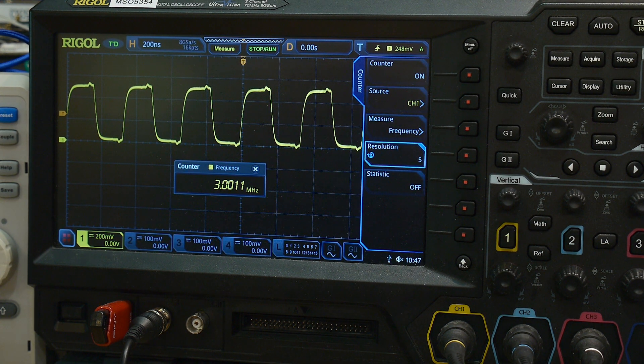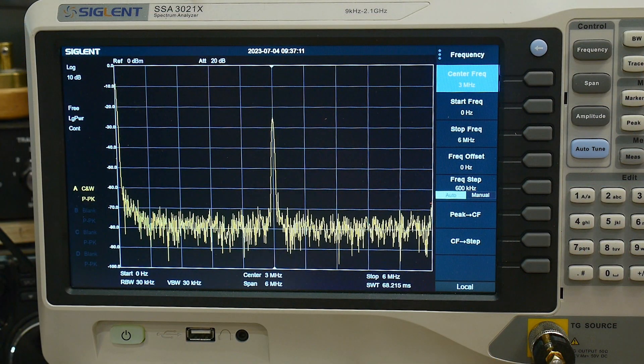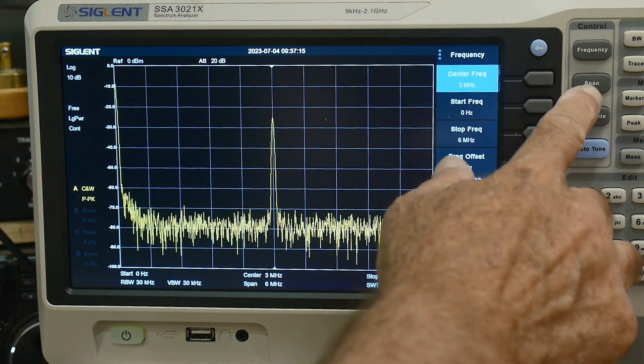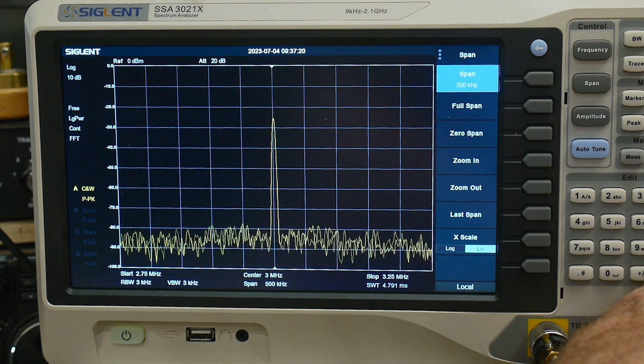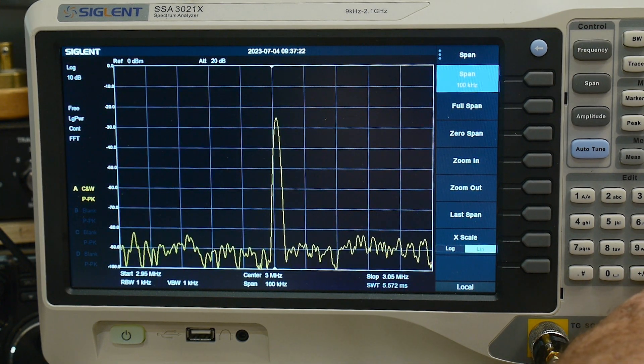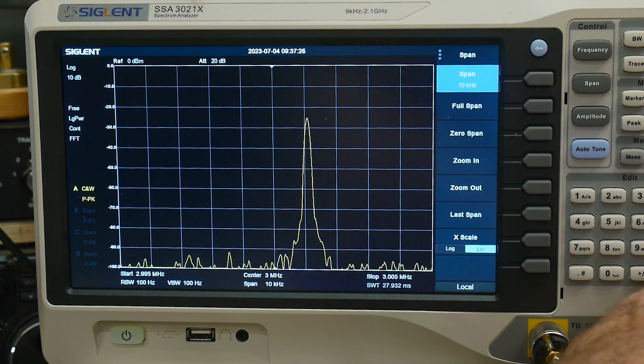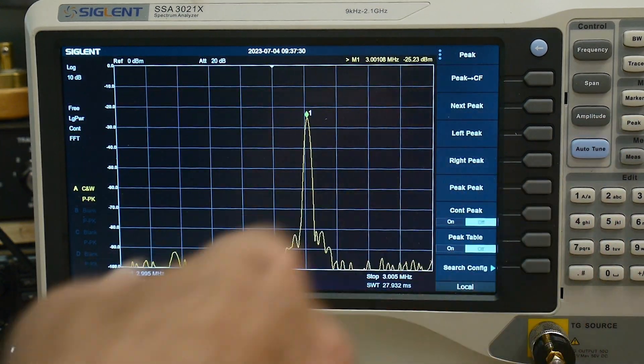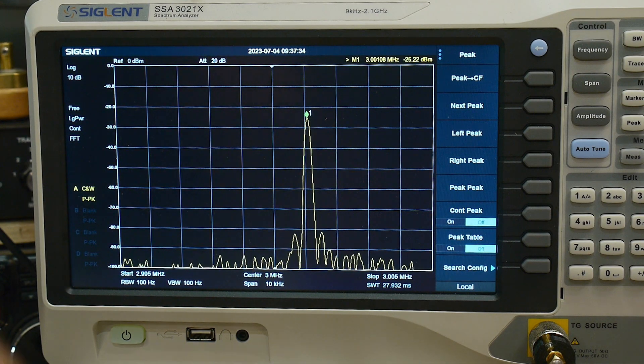Let's take a look at it in the frequency domain. Okay, we have a nice, I have it set at 3 megahertz center, so we're right here. Let's zoom in on it. Let's see here, what's our span? 500 kilohertz, 100 kilohertz, there we go, 10 kilohertz. And we're off a little bit in frequency.